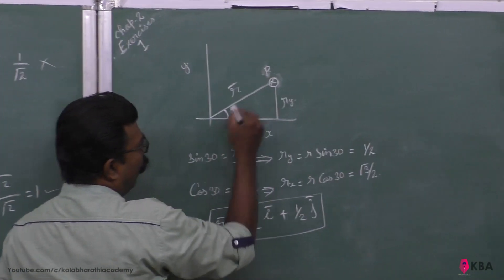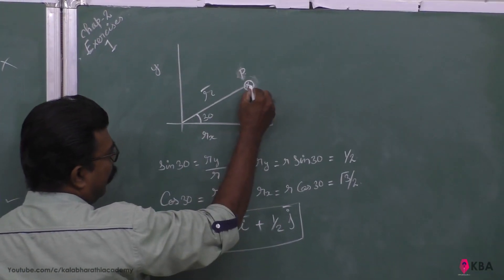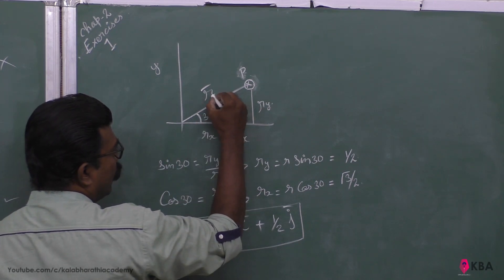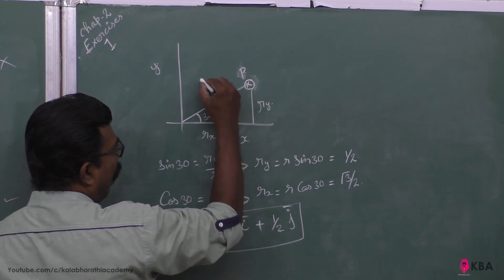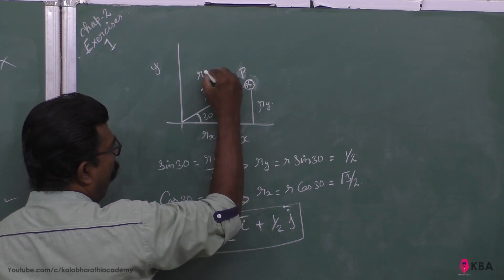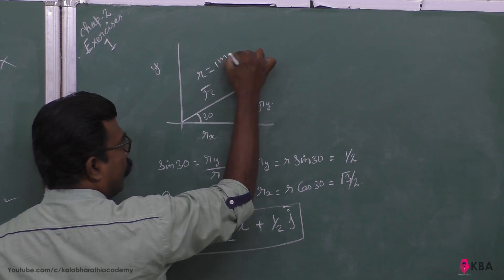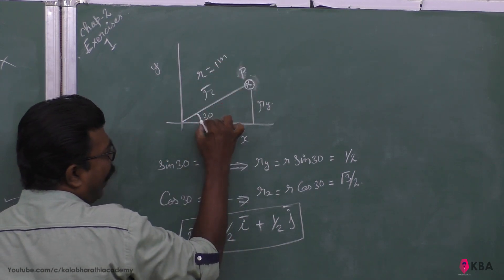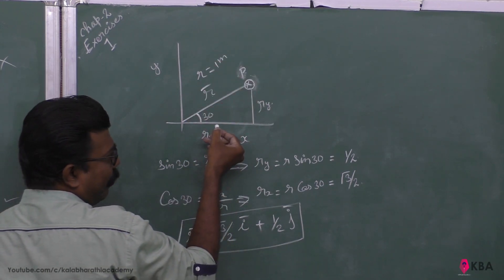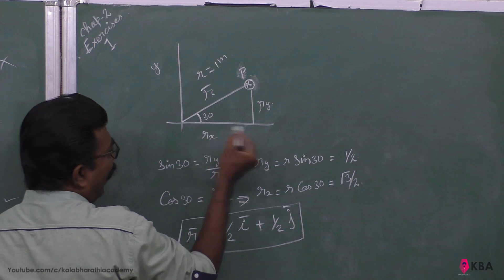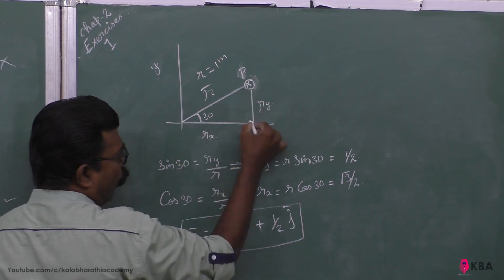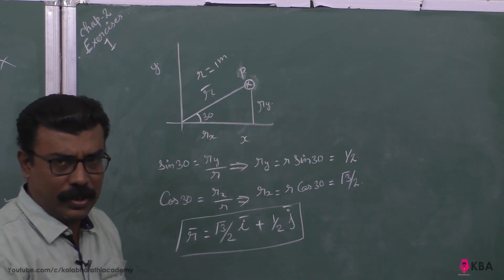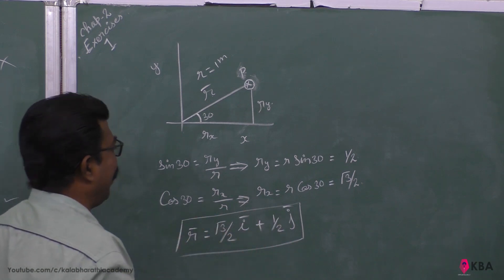The position vector r has modulus 1 meter, and it makes 30 degrees with the x-axis. We need to find the components rx and ry.